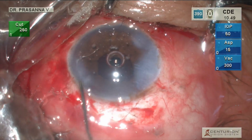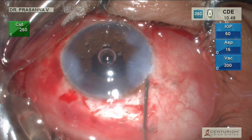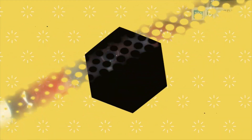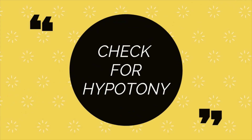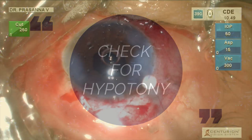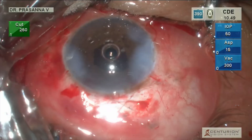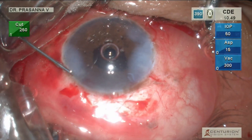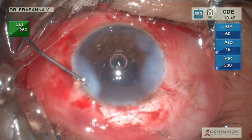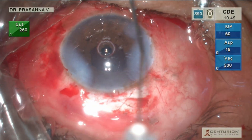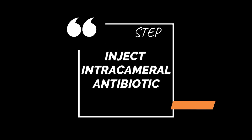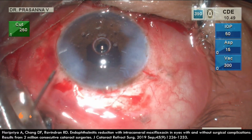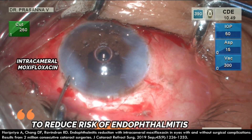Finally, hydrate all wounds and make sure all the ports are watertight. We do not want hypotony in an eye with a compromised posterior capsule. We recommend using intracameral moxifloxacin in all eyes with compromised posterior capsule to reduce the risk of endophthalmitis.